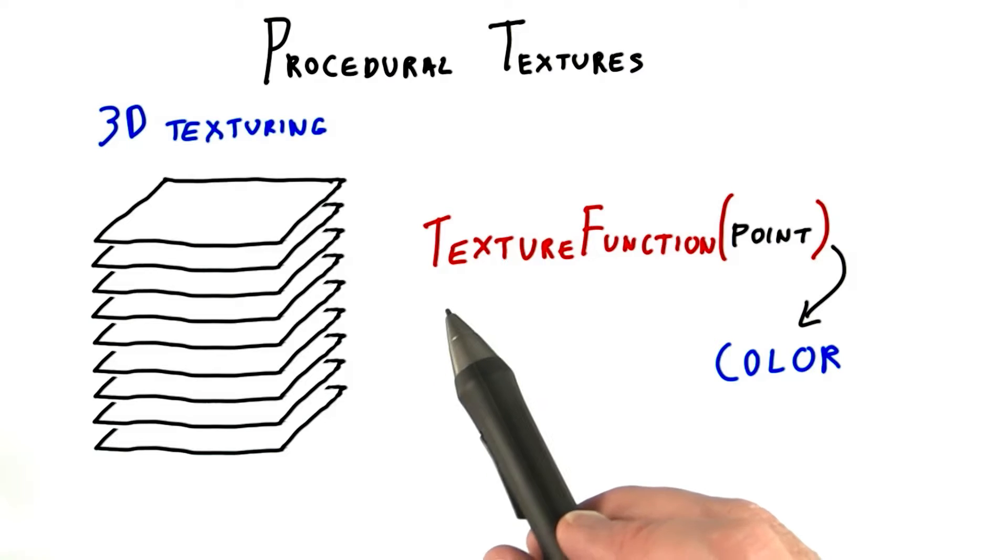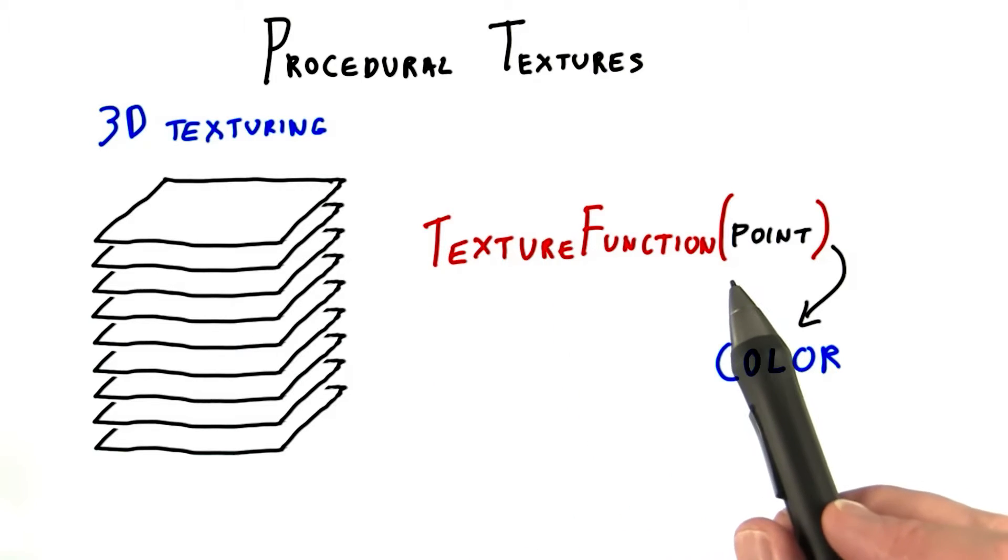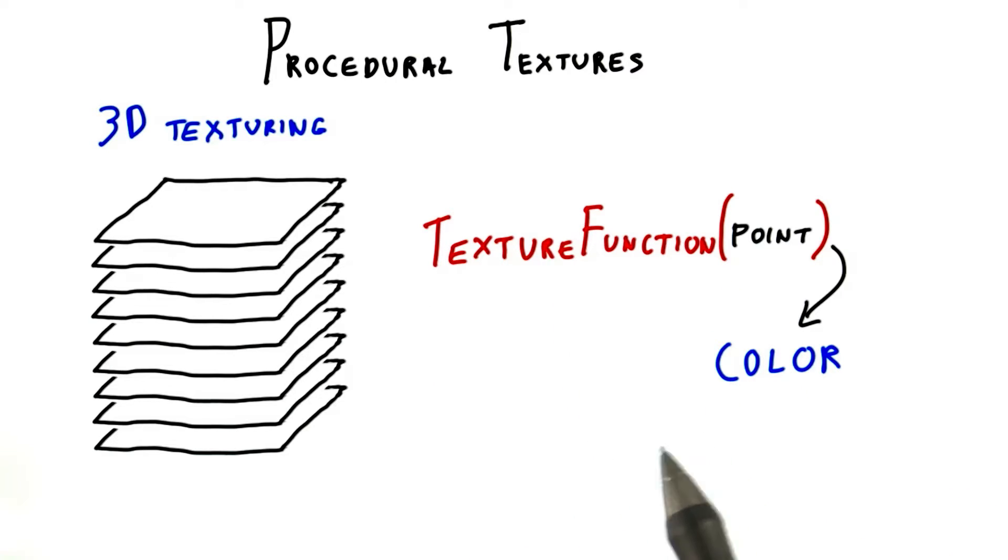Another method is to make a function that takes in a point on a surface and gives back a color. If you think about it, these are equivalent in intent. Using images also takes in a 3D point and gives back a color.